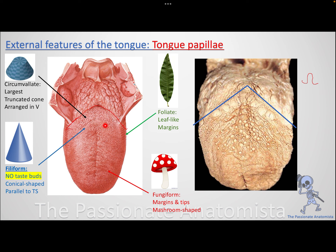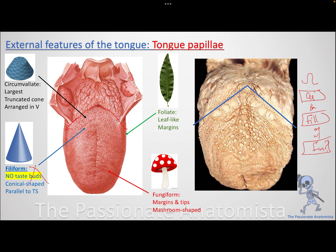Just anterior to the terminal sulcus and parallel to it are the filiform papillae — conical in shape. These do not have taste buds. Scattered across the tongue, at the tips and margins, are the fungiform papillae, which look like mushrooms. A mnemonic to remember the names is: 'Can you fill me with fun?' — standing for circumvallate, filiform, and fungiform.